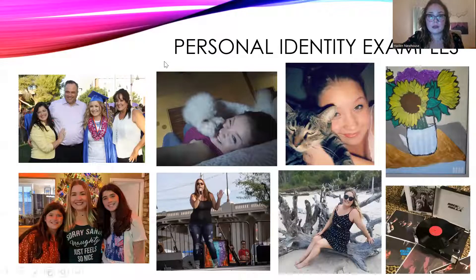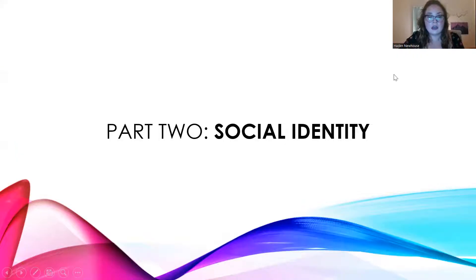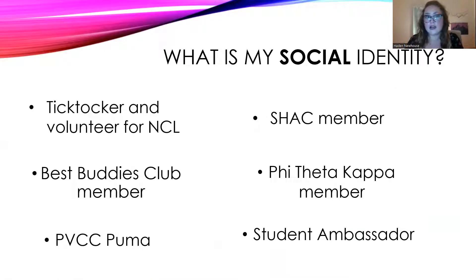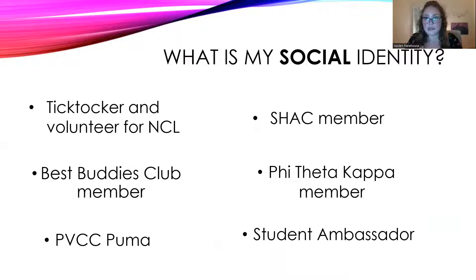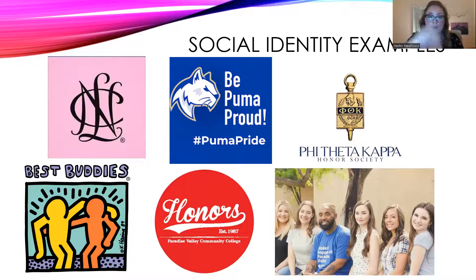So back to my presentation. We will be moving on to my social identity. My social identity is represented by a number of different things. To start, I used to be a volunteer for National Charity League — NCL for short — which is a mother-daughter volunteering organization that focuses on community service, and my title is TikToker. I was also a member of Best Buddies in high school. I'm a PVCC Puma, and I was a member of the SHAC Student Honors Advisory Council my first semester in college. I'm also a member of Phi Theta Kappa, and most recently was a student ambassador. Here are some examples of my social identity — lots of logos here — and the picture at the bottom right-hand corner is from my ambassador photo shoot, and here I am on the left with all of my ambassador team. It was a really cool experience.